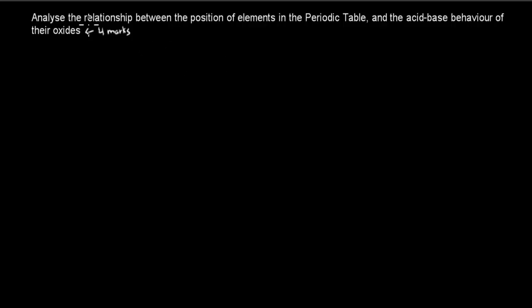This is the question: analyze the relationship between the positions of elements in the periodic table and the acid-base behavior of their oxides — and that's worth 4 marks. So when you're ready, pause the video and attempt the question, then press play when you're done.